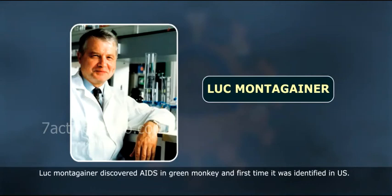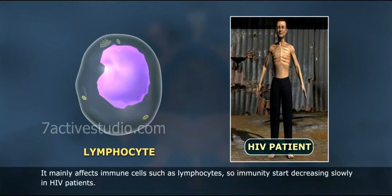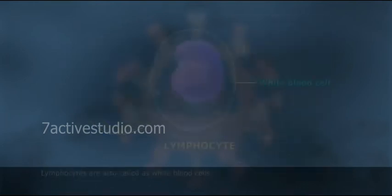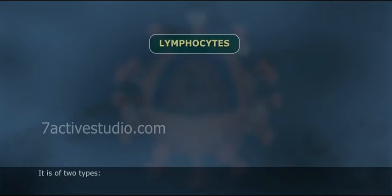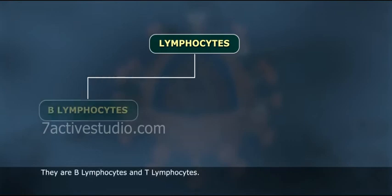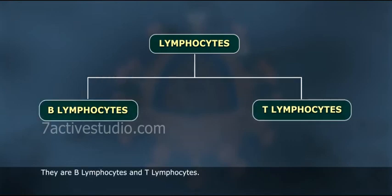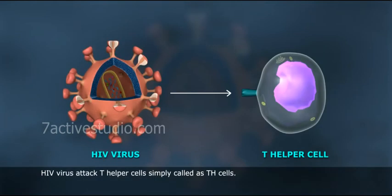Luc Montagnier discovered AIDS in green monkey and first time it was identified in the US. It mainly affects immune cells such as lymphocytes, so immunity starts decreasing slowly in HIV patients. Lymphocytes are also called white blood cells and are of two types: B lymphocytes and T lymphocytes. HIV virus attacks T helper cells, simply called TH cells.